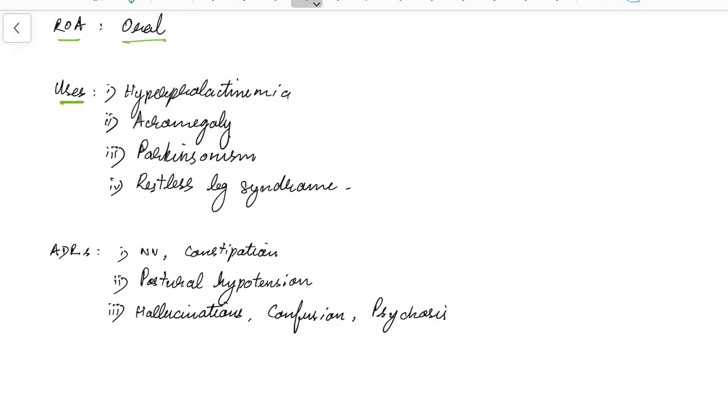Now let us see about the various uses of Bromocryptin. Bromocryptin is used in hyperprolactinemia, acromegaly, parkinsonism, and restless leg syndrome.